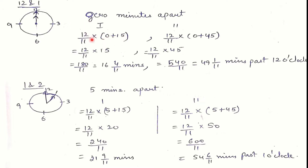The multiplicative factor derived in the last video — 12 upon 11 — remains the same. The time gap changes according to our starting time. Since the gap here is zero minutes, adding 15 gives zero plus 15 equals 15; after solving, they are at right angles at 16 and 4/11 minutes past 12 o'clock. For the second point, adding 45: multiplying 12/11 into 45 gives 49 and 1/11 minutes past 12 o'clock.